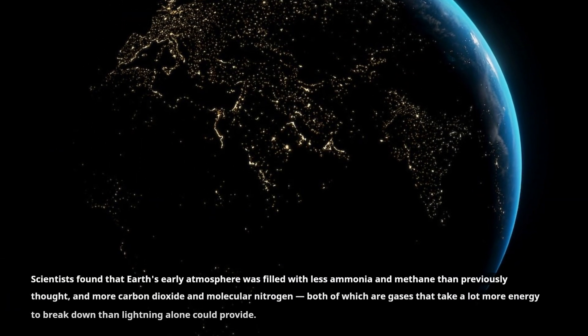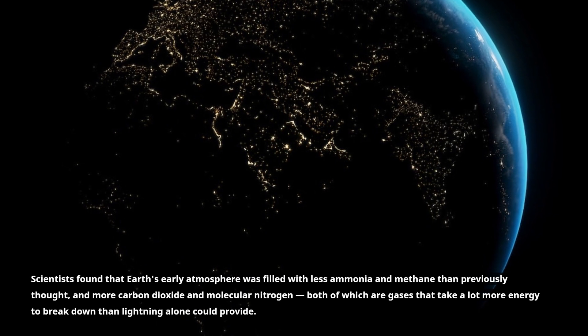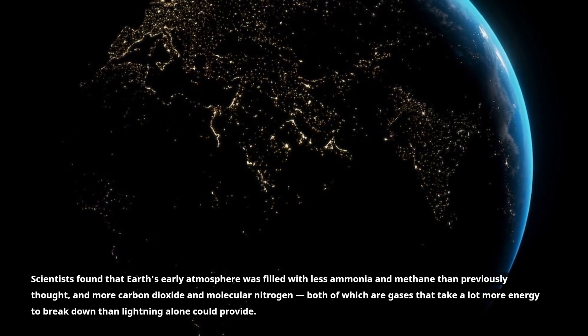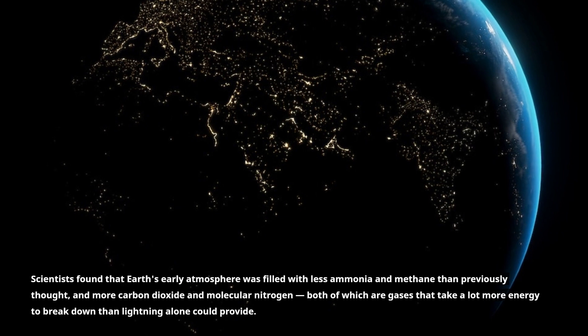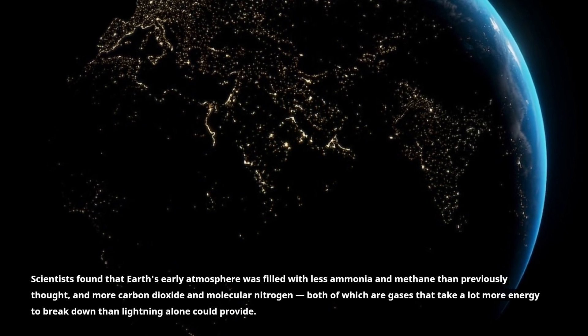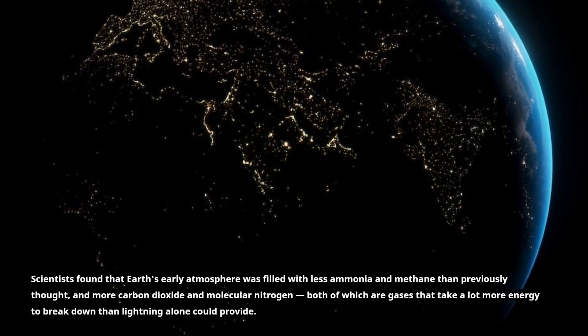Scientists found that Earth's early atmosphere was filled with less ammonia and methane than previously thought, and more carbon dioxide and molecular nitrogen, both of which are gases that take a lot more energy to break down than lightning alone could provide.